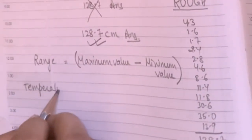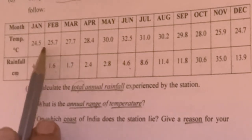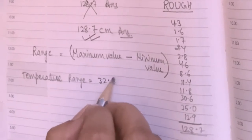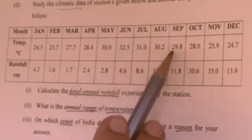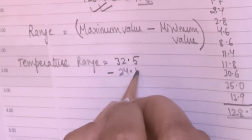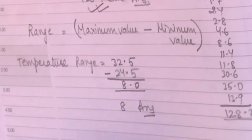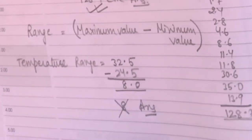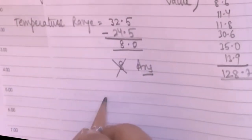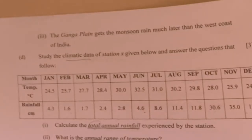Temperature range equals maximum value minus minimum value. You can see the maximum is 32.5°C and the minimum is 24.5°C. Subtract and you get 8. If you write '8' as the answer, this will be wrong — because temperature is always written in degree Celsius. So your answer will be '8 degree C'.